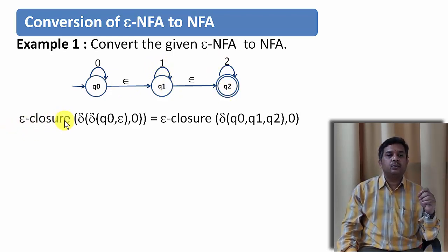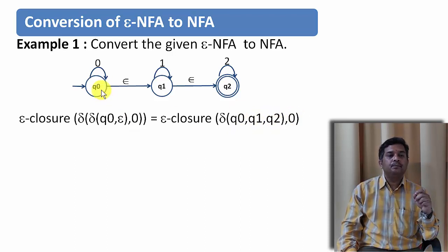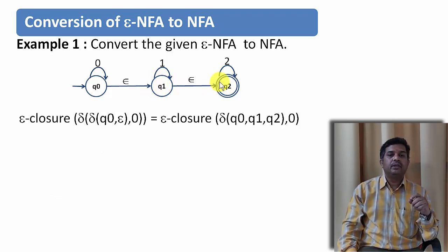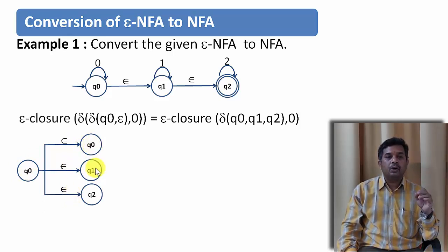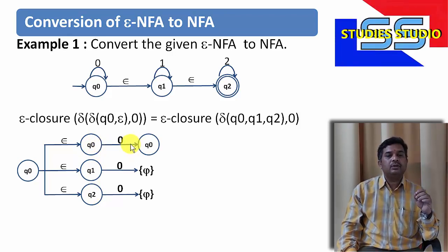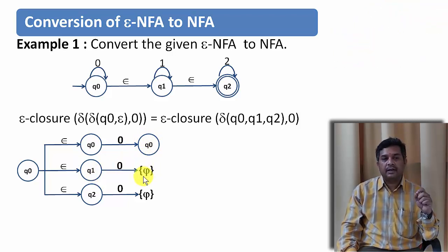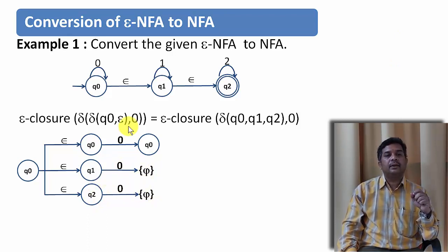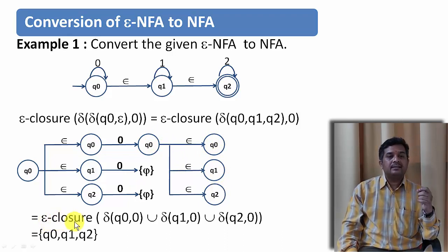We need to find the Epsilon closure of Q0. On Epsilon transition, Q0 goes to Q0, Q1, and Q2 — because from Q0 giving Epsilon you reach Q1, and giving Epsilon again you reach Q2. Now on input symbol 0: Q0 on 0 goes to Q0, Q1 on 0 is undefined (phi), Q2 on 0 is also undefined (phi). Taking Epsilon closure of Q0 again gives Q0, Q1, Q2. So the Epsilon closure of delta(Q0, 0) = {Q0, Q1, Q2}.